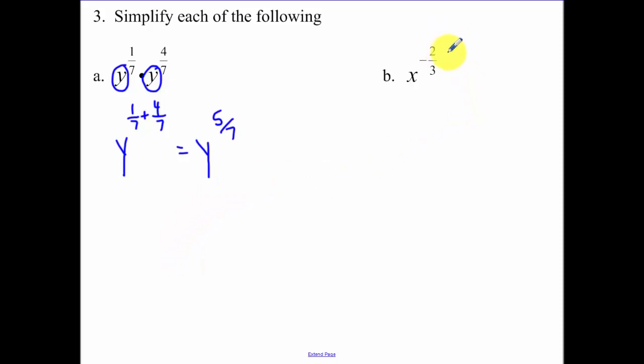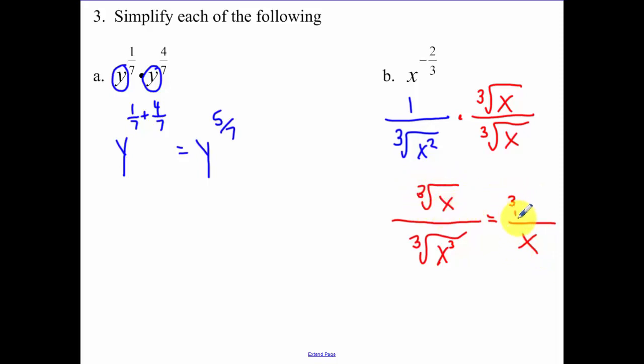For the next one, negative exponent puts that in the bottom, and that's the cube root of x squared. Now we can't have radicals in the bottom, so I need to multiply by something that's going to make that an x to the 3rd underneath there. The cube root of x over the cube root of x. When I multiply this x times that x underneath my radical, I'm going to get x to the 3rd, which is going to simplify to be x. On the top we just have the cube root of x, and that just carries along with us.